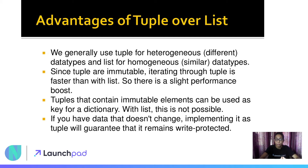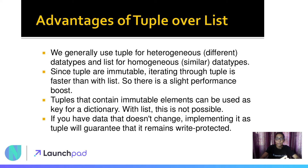Since the tuple is immutable, iterating through a tuple is faster than a list, and execution is also faster. The performance is slightly boosted for tuple structures compared to lists. Tuples can also contain immutable elements that can be used as a key of a dictionary, which is not possible with lists.